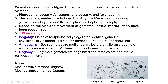Based on the size and movement of gametes, sexual reproduction has been classified. The first type of planogamy is isogamy — 'iso' means same. There is fusion of morphologically identical flagellated gametes; the male and female gametes are morphologically identical but physiologically different. Examples: Chlamydomonas, Ulothrix, Cladophora.